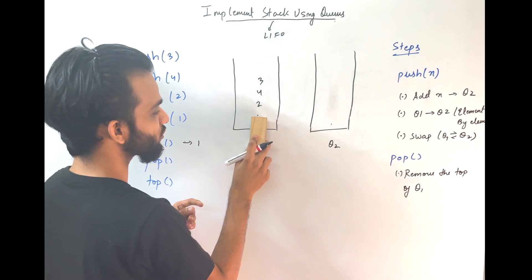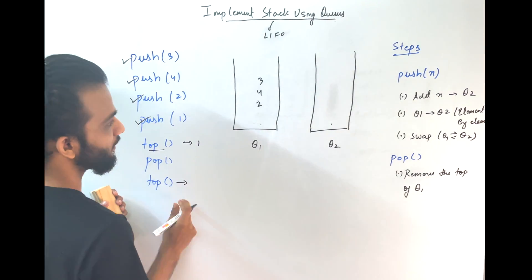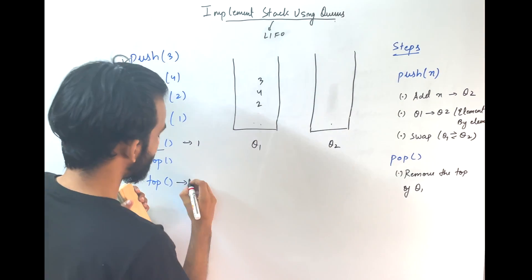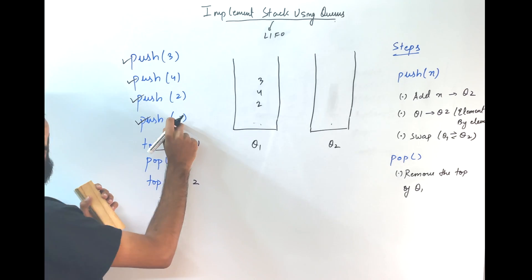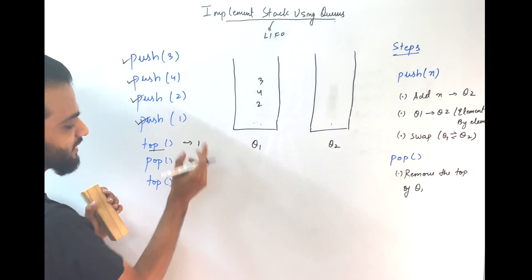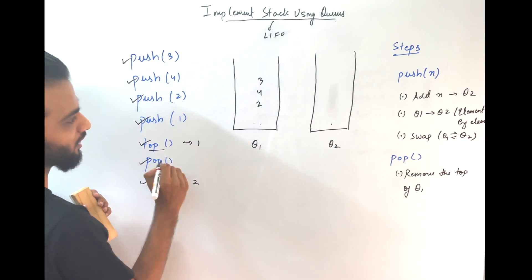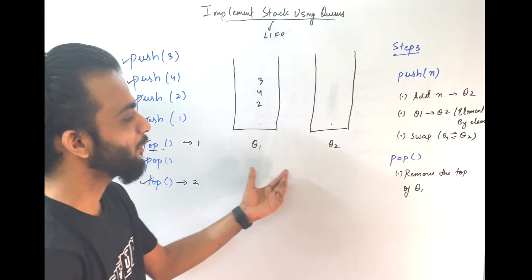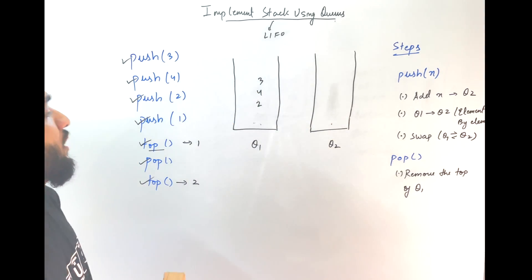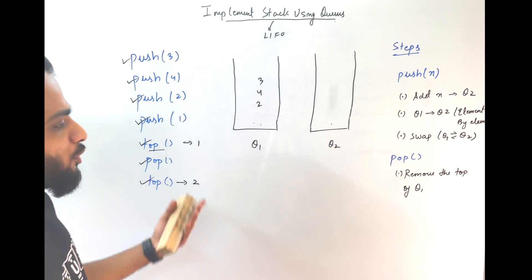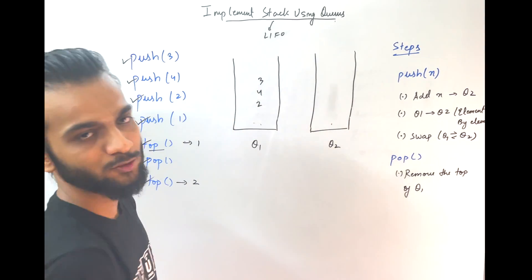Pop — remove this element. Top — you get 2. Again, makes sense because before 1, the element 2 was inserted. So this is how the stack works with the help of a couple of queues. In order to remove, it's very simple — just remove the top of Q1.